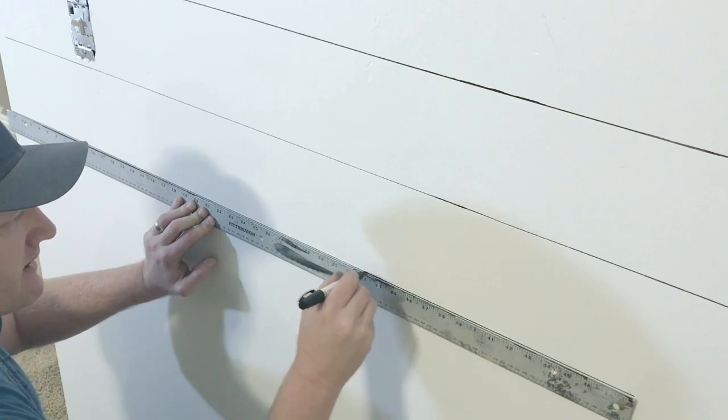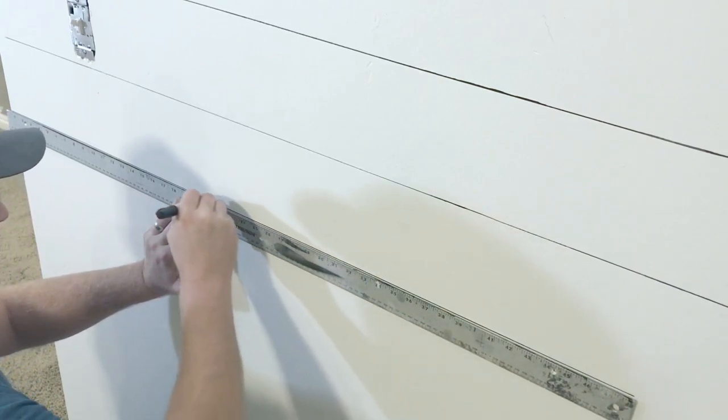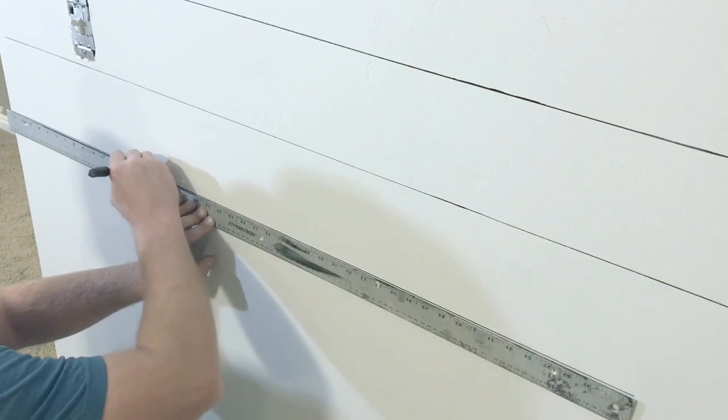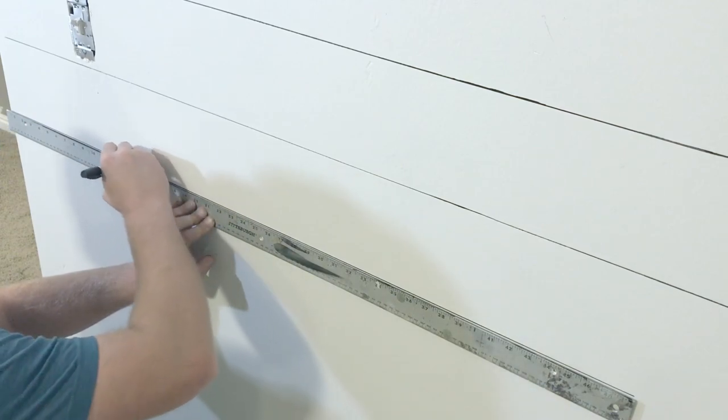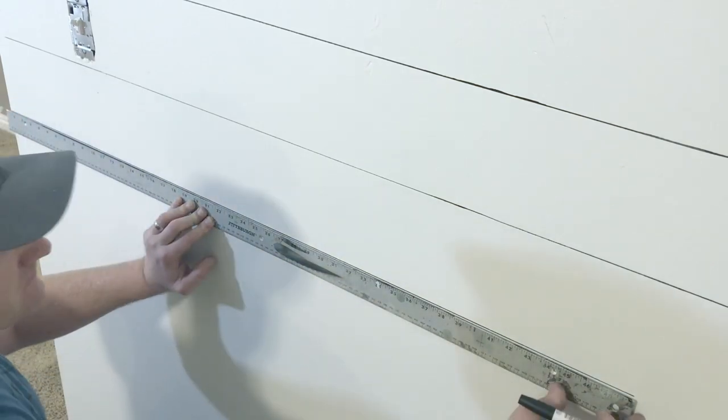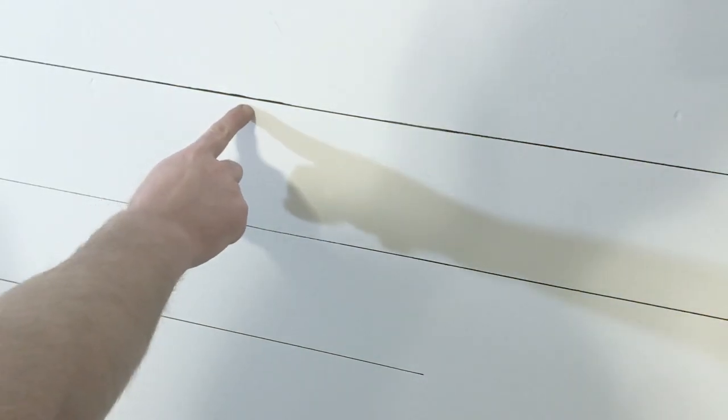I'm going over my line a couple times to thicken it up that way if there's a mistake down the road it doesn't look so out of place if I have to thicken it up down there or where there's an intersection where I move my straight edge. Like right here you can see it's a little thick, I'm gonna have to come back through there and thicken that up.